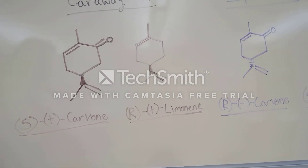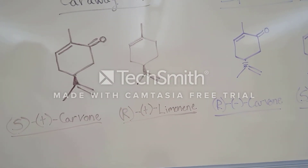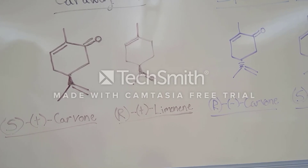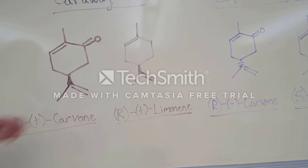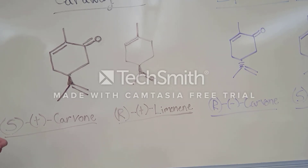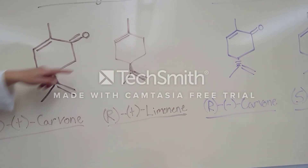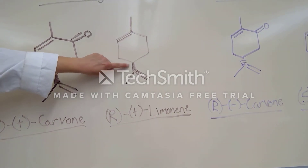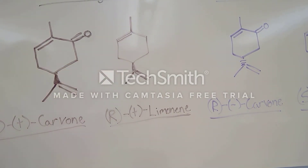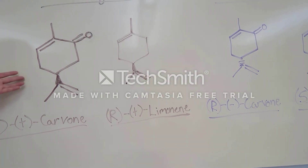For our second structure in caraway oil we have R(+)-limonene. Limonene and carvone are extremely similar, but limonene is not a ketone — it is just an alkene. This is the R enantiomer of limonene, and at the chiral center we see again the wedge symbol. So these would be the two structures possibly separated in caraway oil.